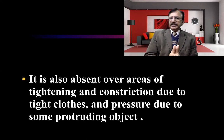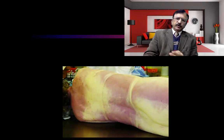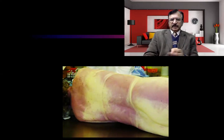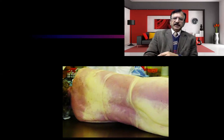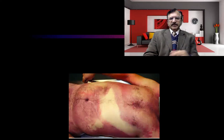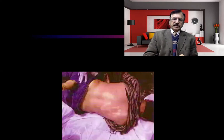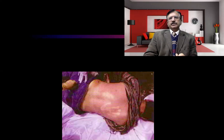Post-mortem staining is also absent over areas of tightening or constriction due to tight clothes. Any protruding object or constriction will also prevent post-mortem staining from being visible there. Pictures show the back of a dead body with areas devoid of staining at contact points and staining developed in between. A protruding hand pressing the skin prevented staining from developing at that pressure point.